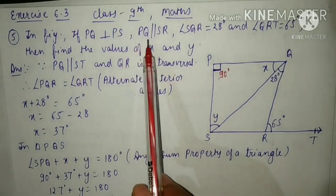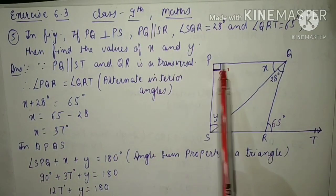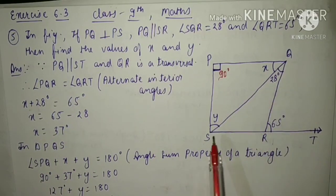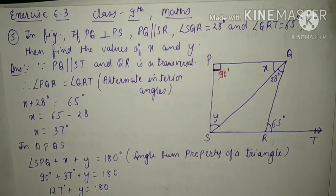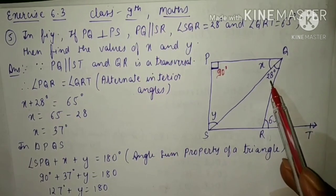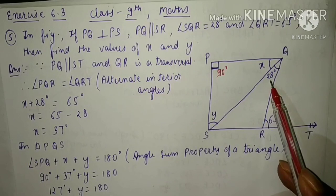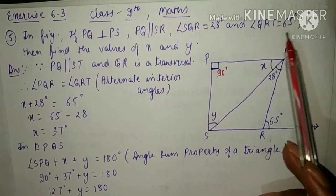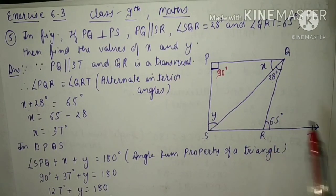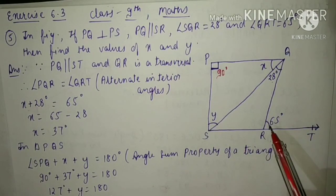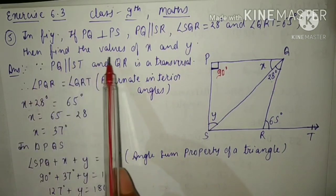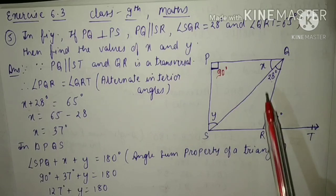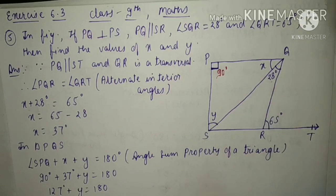PQ is parallel to SR. Angle SQR is equal to 28 degrees and angle QRT is equal to 65 degrees. We have to find the values of X and Y.